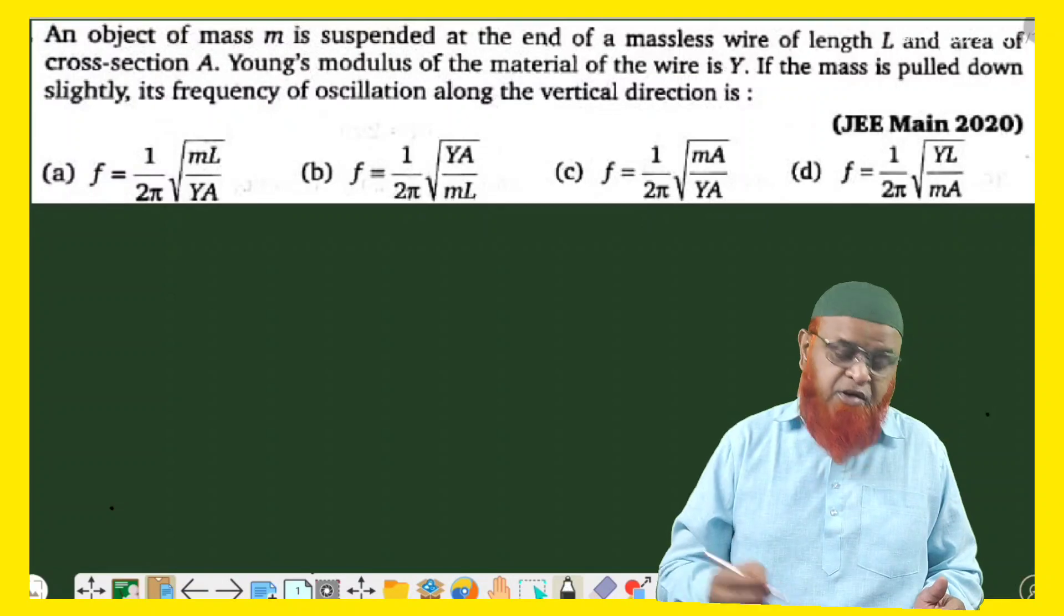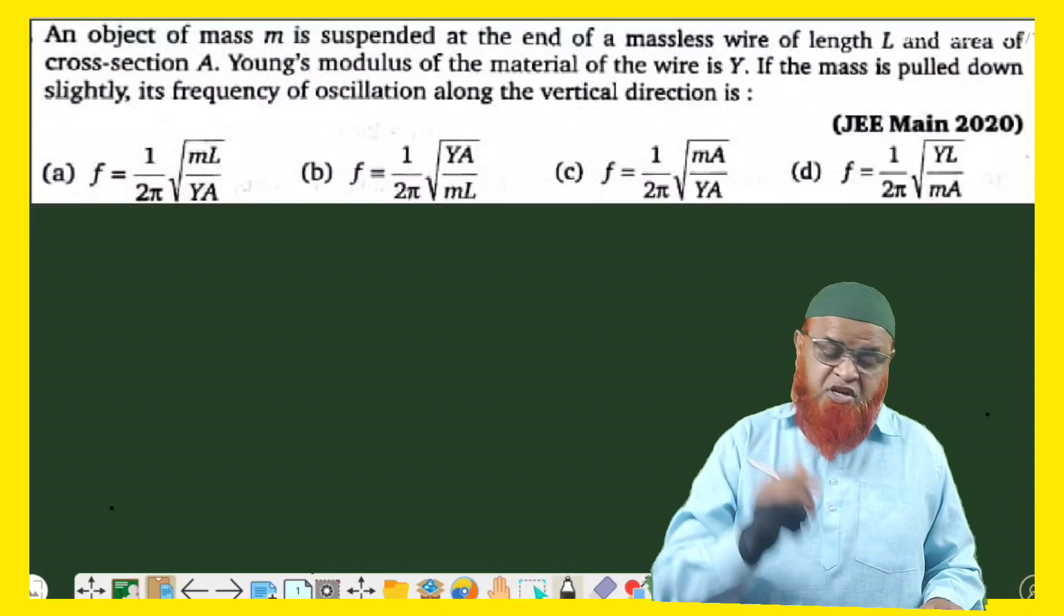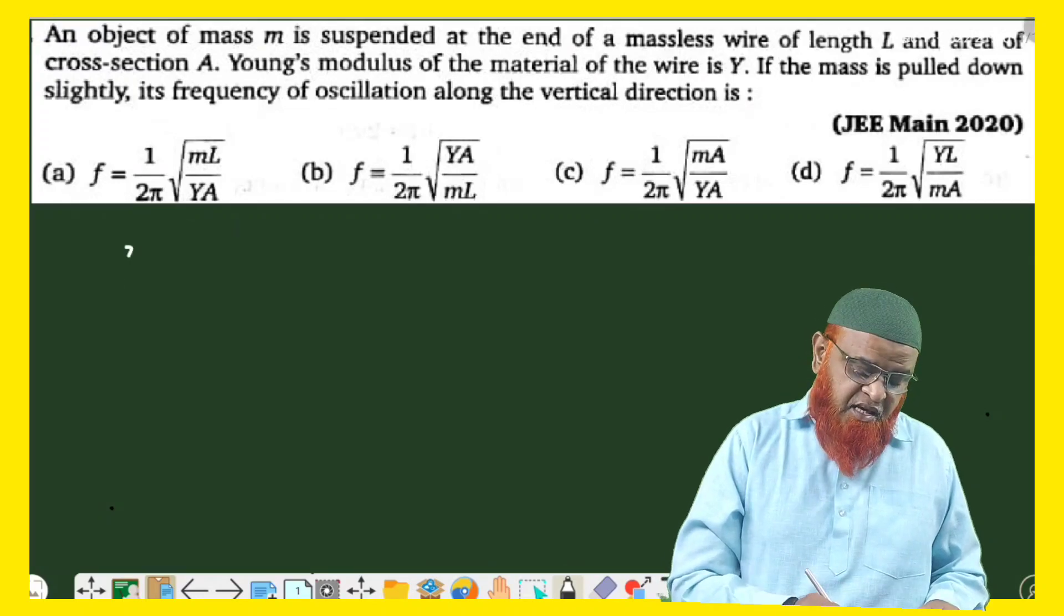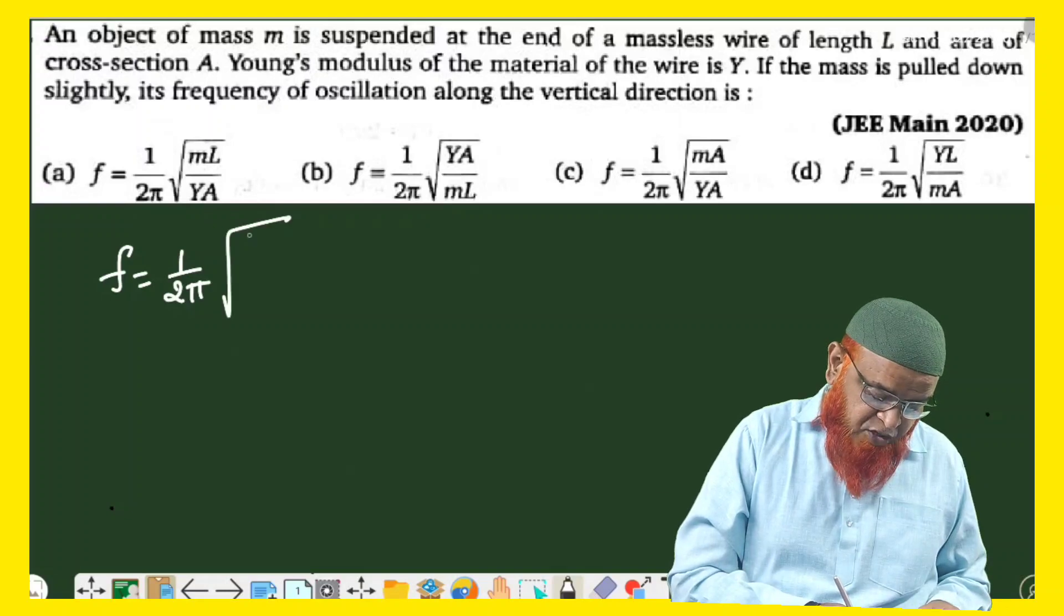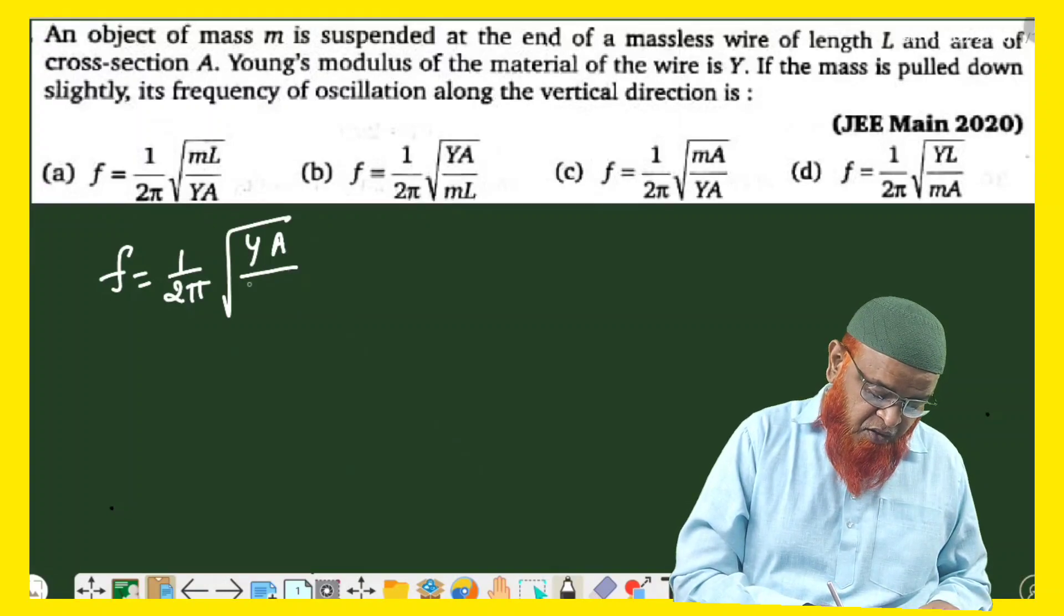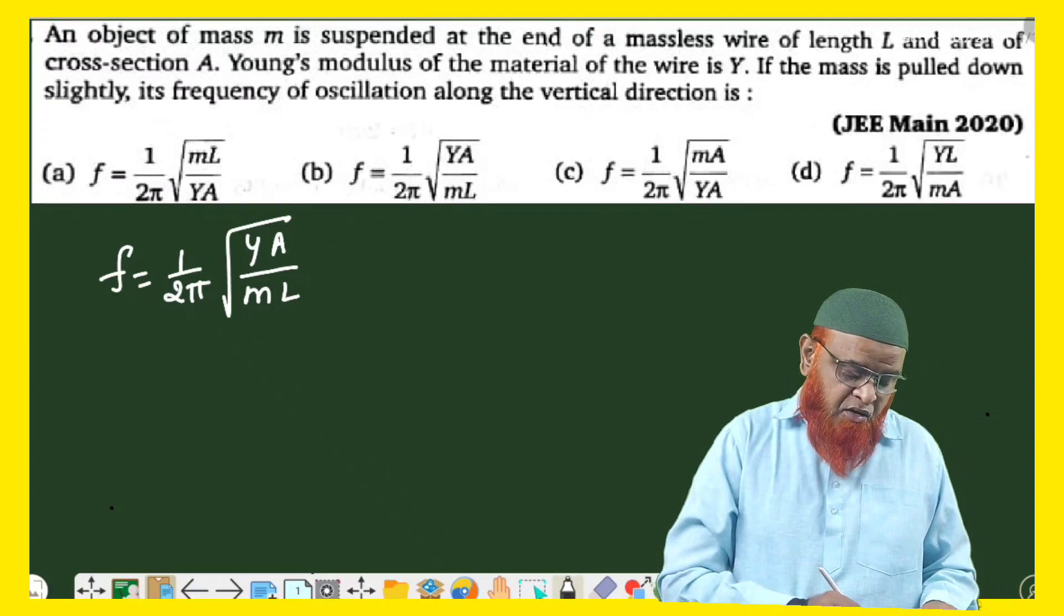This is just like a trial and error method, but a very efficient method. It's very simple to solve. In the second option, if you observe, it's asking us to find out the frequency. Frequency f is going to become 1 by 2π square root of YA by m into L.